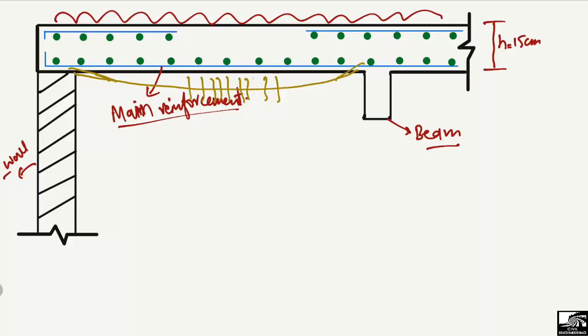There will be some stresses and cracks produced perpendicular to the direction of the reinforcement. To close these cracks, or to avoid such cracks, we provide reinforcement in the longitudinal direction to resist these flexural stresses. This is known as the main or longitudinal reinforcement.